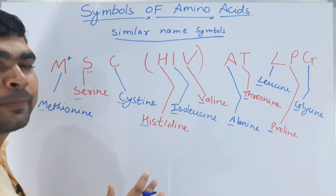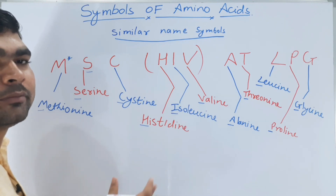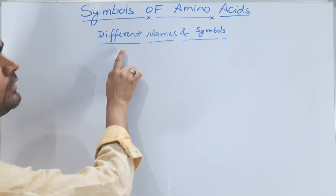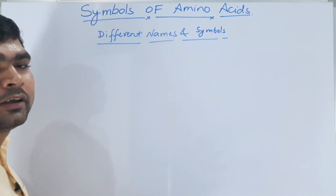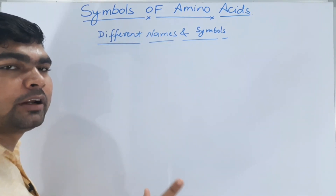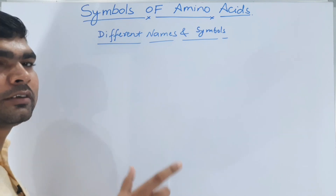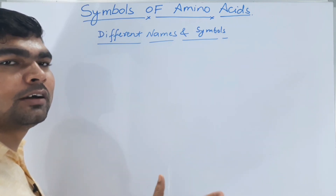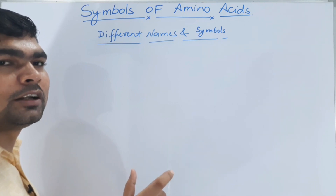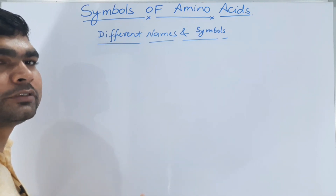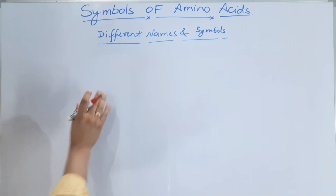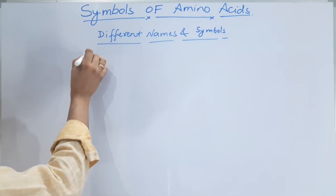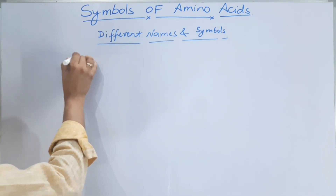Now there is a trick for the amino acids with different names and different symbols. There is a boy named Denver — we call him Denvi with love — and he has a Fakir kind of personality, meaning he is very poor. So the mnemonic name is Denvi Fakir.